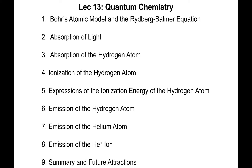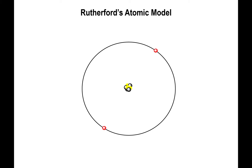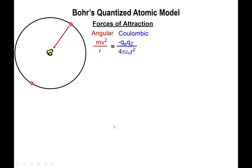We start Lecture 13 by talking about the Bohr atomic model of the atom. In particular, we're going to derive the Rydberg-Balmer equation. Rutherford performed his gold foil experiment, which allowed the description of the atom as having positive charge concentrated in a tiny region of space known as the nucleus. Chadwick's work also showed neutrons to be there, and the electrons were thought of as orbiting the nucleus much like planets orbit the Sun.